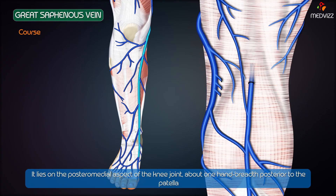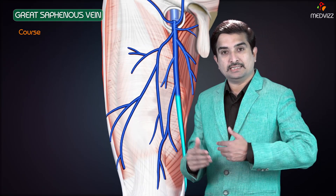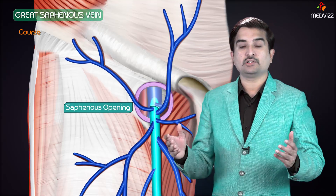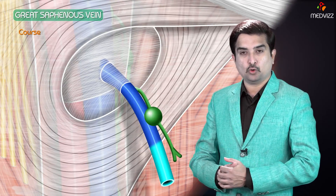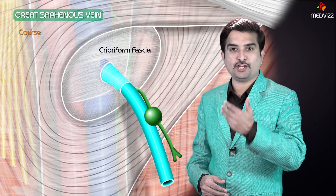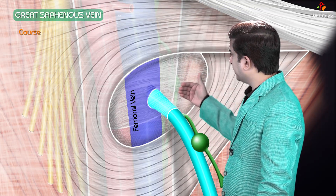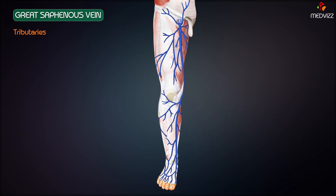At the knee it lies on the posteromedial aspect of the knee joint, about one hand breadth posterior to the patella. From here it runs upwards along the medial side of the thigh to reach the saphenous opening, also known as Fossa Ovalis. It passes through the saphenous opening after piercing the cribriform fascia, where it drains into the femoral vein after piercing the femoral sheath. Now let us talk about the tributaries.